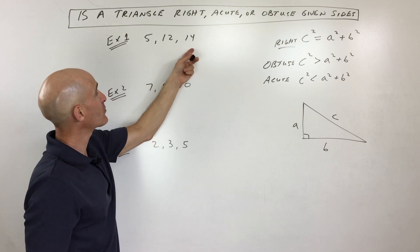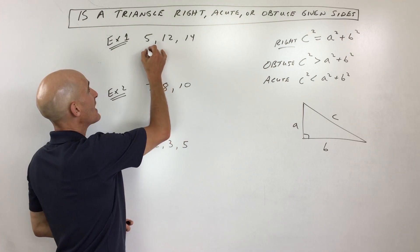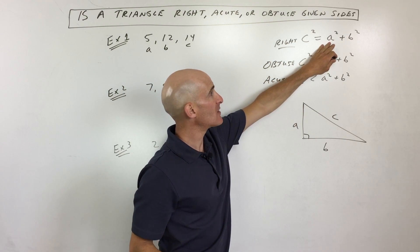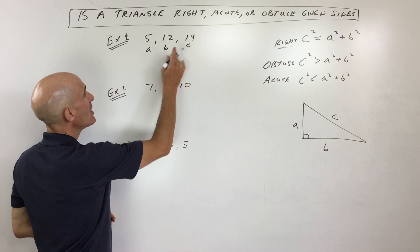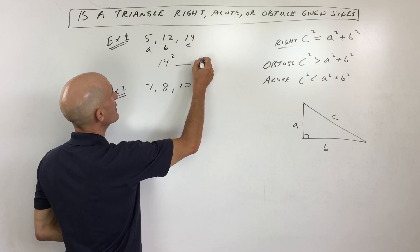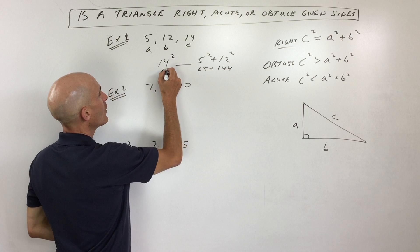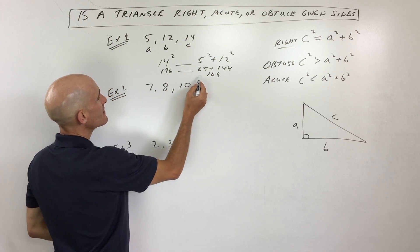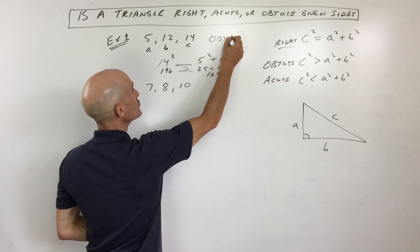So if we're given the three sides — 5, 12, and 14 — how do we know which is a, b, and c? Basically, a is the shortest side, b is the medium, and c is the longest side. It's easier to work with c squared on the left: 14 squared — is it less than or greater than a squared plus b squared? Well, 14 squared is 196, and 5 squared plus 12 squared is 25 plus 144, which equals 169. You can see that 196 is greater than 169, so this is an obtuse triangle.